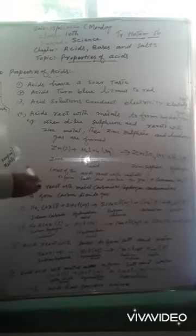Acids react with metal carbonates. Acids react with metal carbonates. Metal carbonates or hydrogen carbonates produce carbon dioxide.